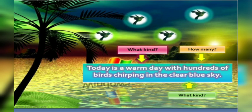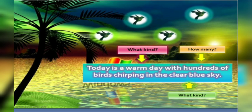Now see the picture. What kind? How many? And what kind? When you read the sentence, you will get the answer to all three questions. 'Today is a warm day with hundreds of birds chirping in the clear blue sky.' Here, what kind of day? Warm day. How many birds? Hundreds of birds. What kind of sky? Clear blue sky. So the words warm, hundreds of birds, and clear blue are the adjectives used in the sentence.